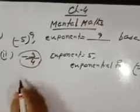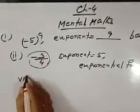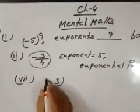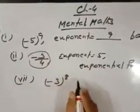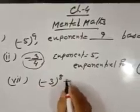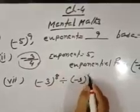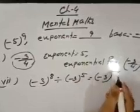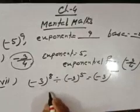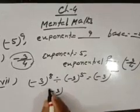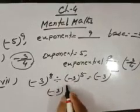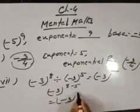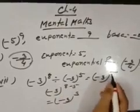Point number 7: minus 3 to the power 8 divided by minus 3 to the power 5. In the case of division, powers are subtracted. So 8 minus 5 equals 3, giving us minus 3 to the power 3 as the answer.